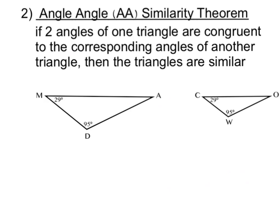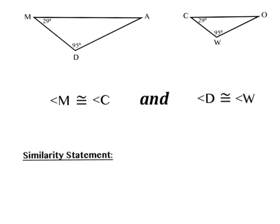Please copy down this similarity theorem into your notes, as well as the two triangles shown below. Pause your video at this time to complete this. When I look carefully at these two triangles, I notice that angle M is 29 degrees, and its corresponding angle in the small triangle, angle C, is also 29 degrees.